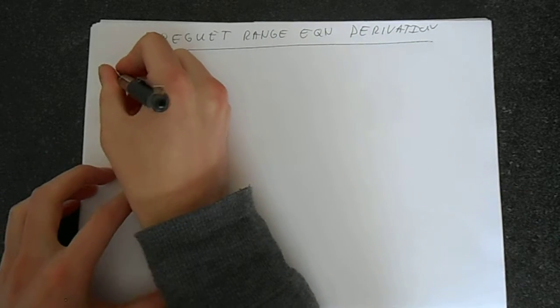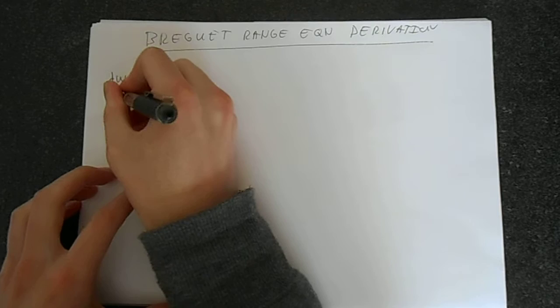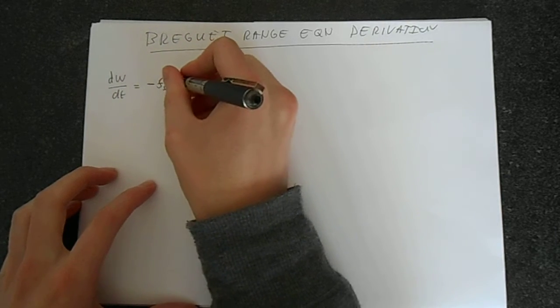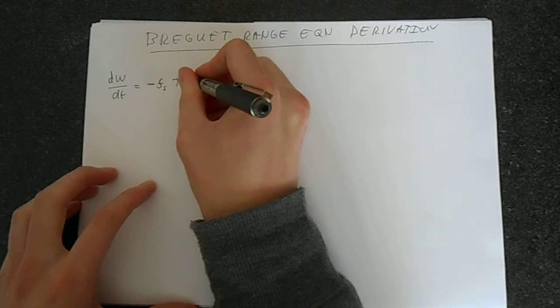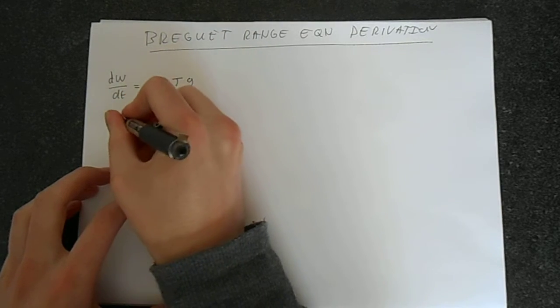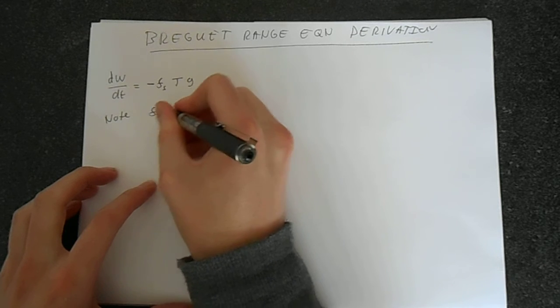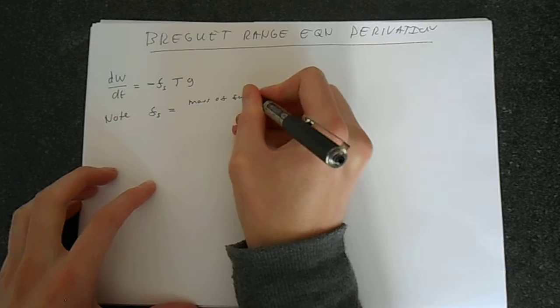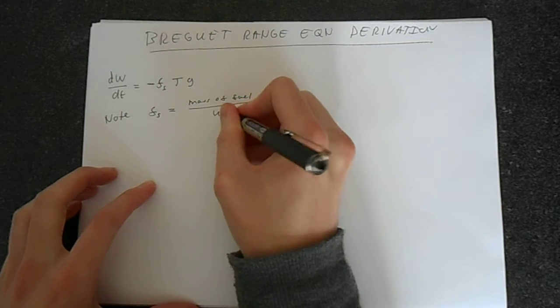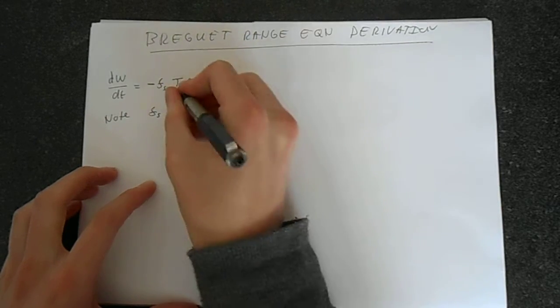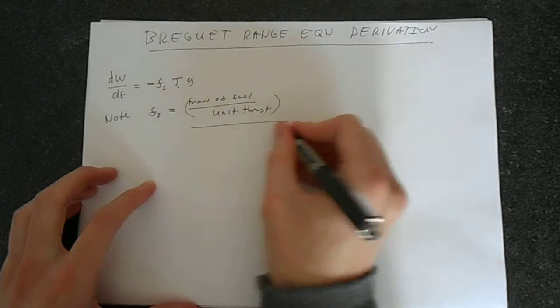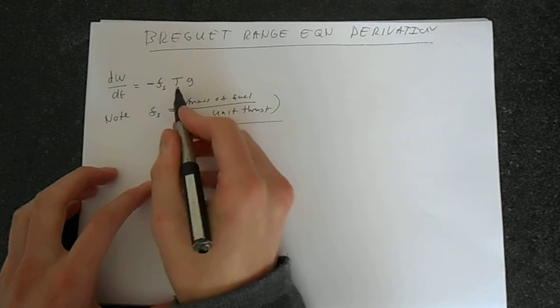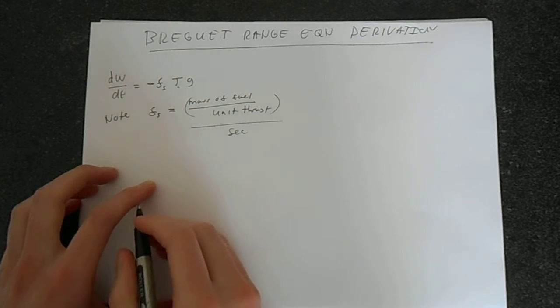So we can start by saying that dW/dt equals minus the specific fuel consumption times the thrust times gravity. And if we note the definition of the specific fuel consumption, this is the mass of fuel per unit thrust. That's why we multiply by this t here. And then this is per second. Therefore this equation makes sense. You get the units that you would expect for such a derivative.